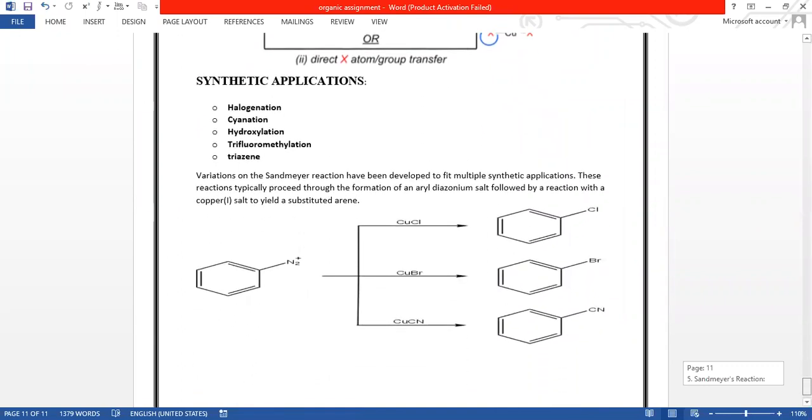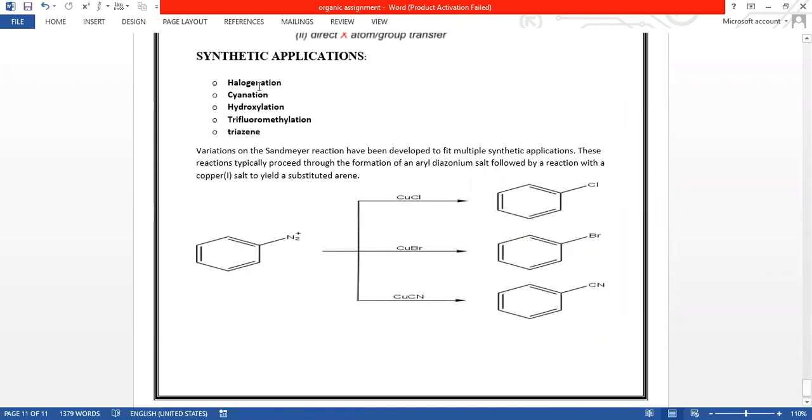The synthetic application of this reaction are through which we can prepare halogenation, cyanation, hydroxylation, trifluoromethylation, and tri-venime. Variation of the Sandmeyer reaction have been developed to fit the multiple synthetic application. These reactions typically proceed through the formation of aryl diazonium salt, followed by the direction of the copper salt to yield the substituted arine. Under the catalyst copper chloride, copper bromide, copper cyanide, we get our chloride, bromide, and cyanide substitute on the benzene.